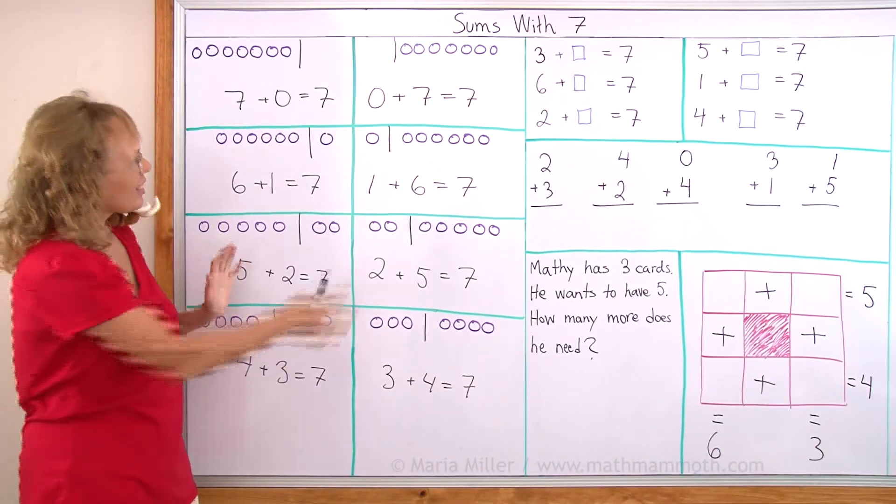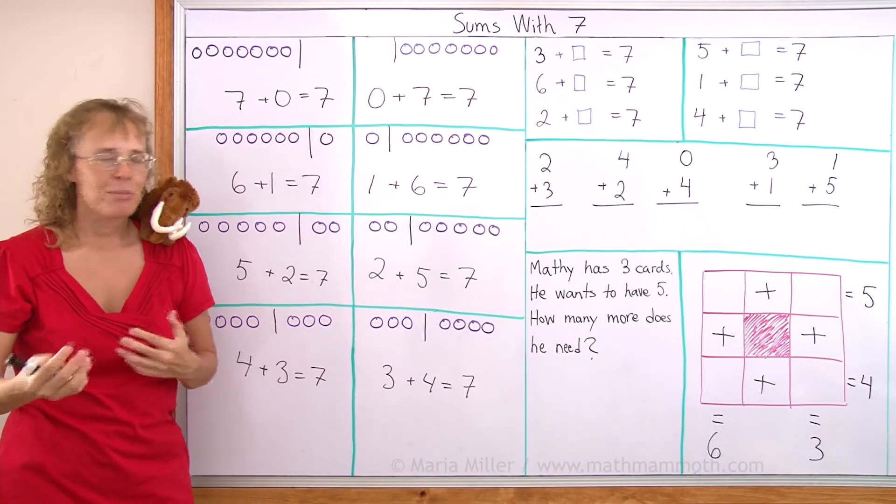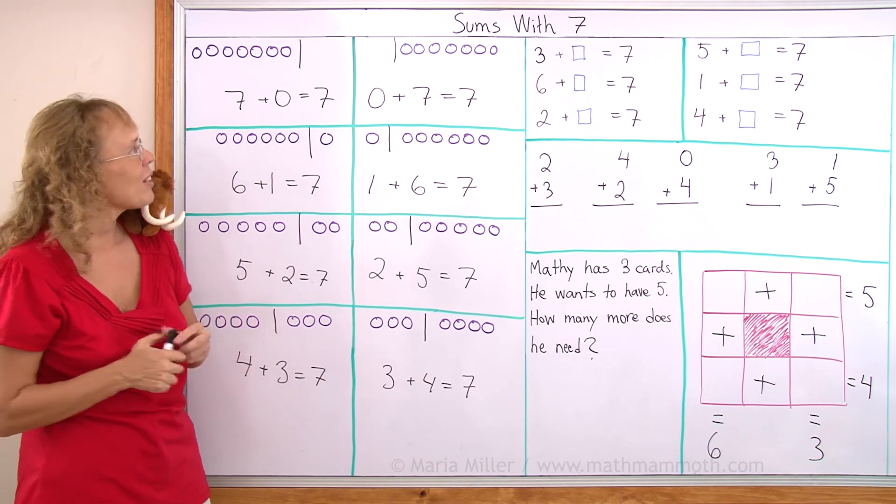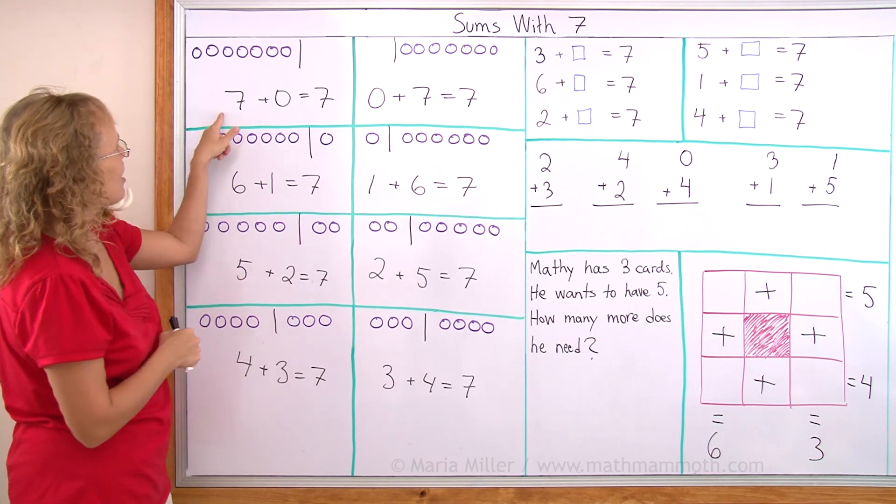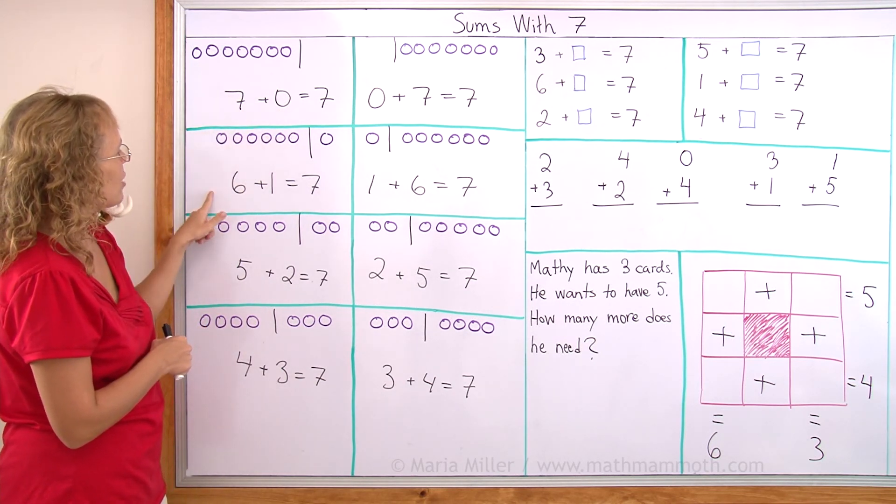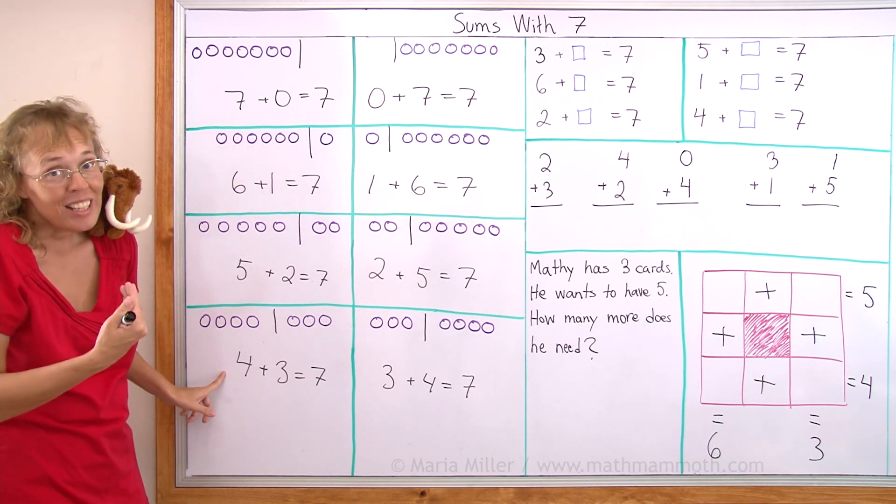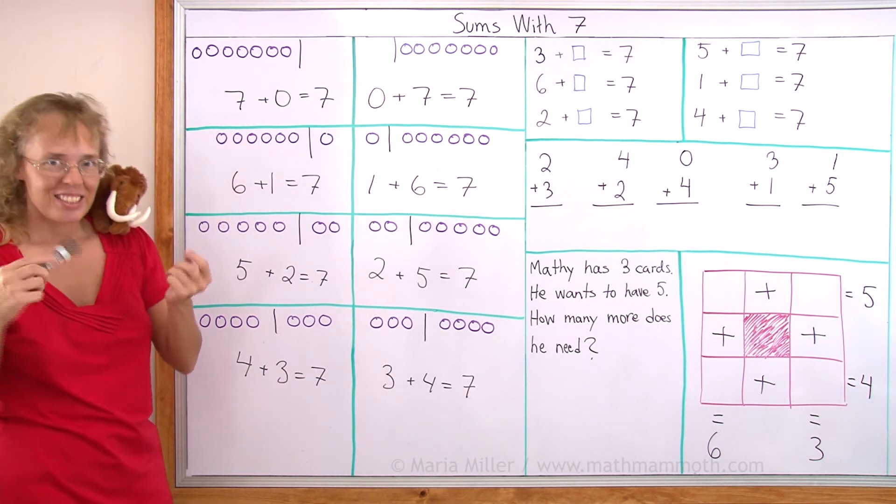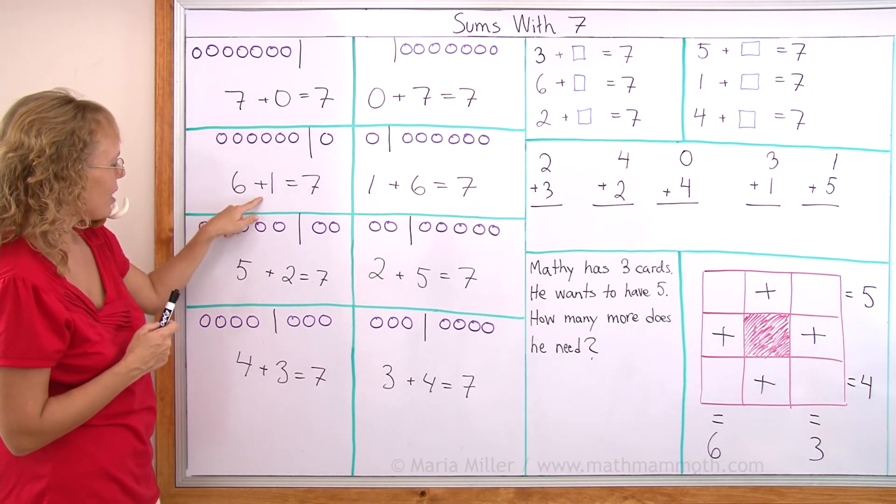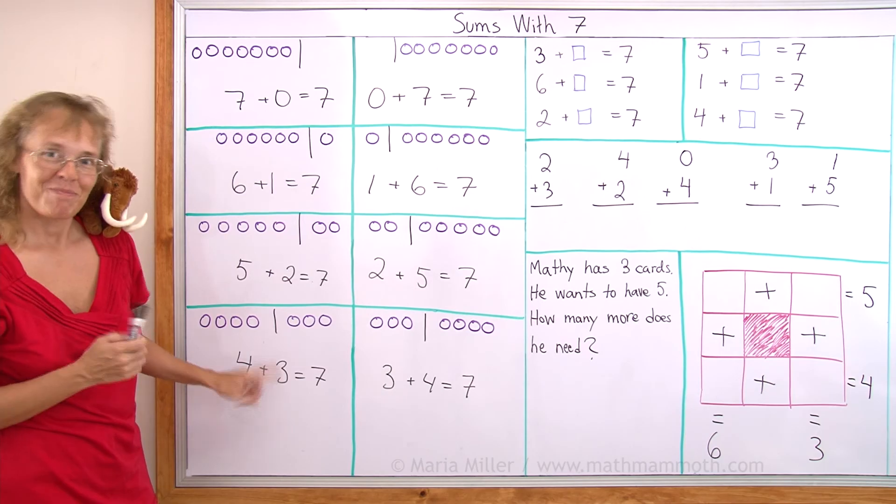Now notice something about this table where we have all these possible ways to make seven. When I start out here I have seven and zero. If I go down this way I have six here. Seven and six and five and four - a pattern. Or if I look at these second numbers I have zero, one, two and three - a pattern.